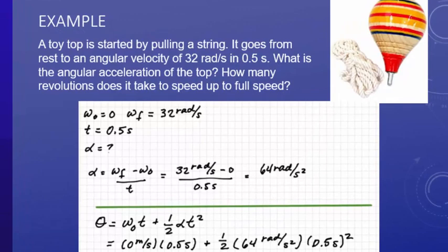We have our initial angular velocity, which is zero. Our final angular velocity is 32 radians per second—units are already good, we're in radians per second. Our time is half a second, and we're looking for the angular acceleration, or alpha. Looking back at the equations, we have everything to fit into the change in angular velocity over time. We plug our information into the equation and end up with 64 radians per second squared.